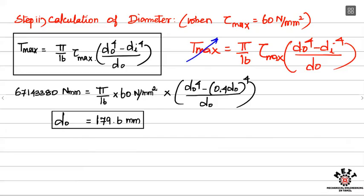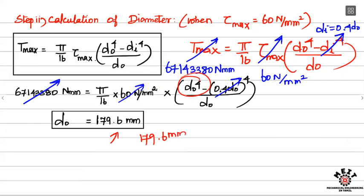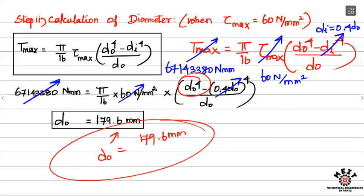Substituting T_max = 67,143.38 Nm, τ_max = 60 N/mm², and Dᵢ = 0.4 × D₀, we replace Dᵢ in the formula with 0.4 D₀ so the only unknown is D₀. After substituting all values and solving, the outer diameter from the shear stress condition is D₀ = 171.2 mm.